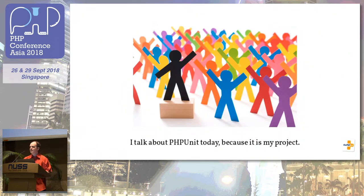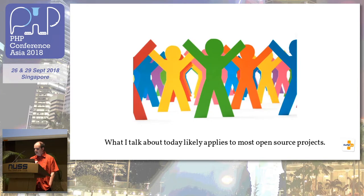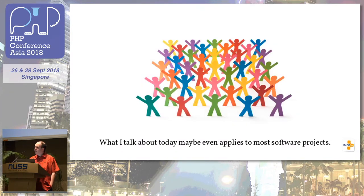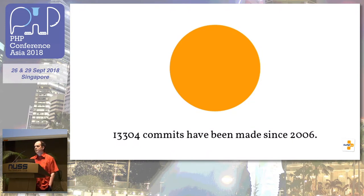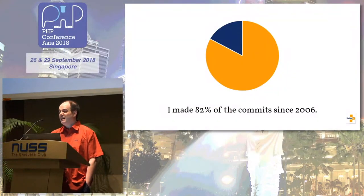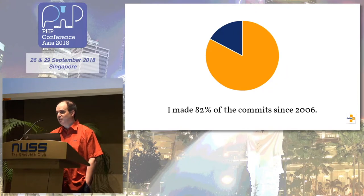I'm talking about PHPUnit here today because it is my project, and I know a lot about it — both on the technical side and the history side. But what I talk about today likely applies to most open source projects out there, and may even apply to non-open source projects. Looking back, I do not have version control records before 2006 — they're gone. Since 2006, there were 13,000-something commits to PHPUnit, and I made 82% of that.